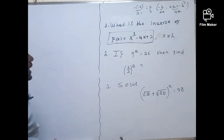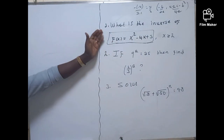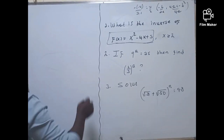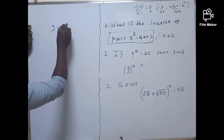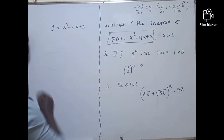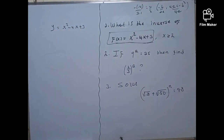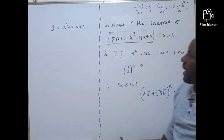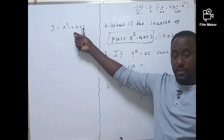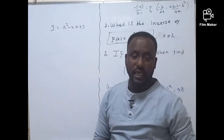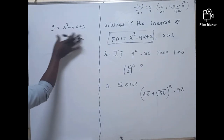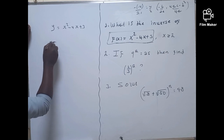And hence the function is invertible. Now, to find the inverse of any function, the first step is to write it in the form y = x² - 4x + 3. This is the first step that helps us find the inverse. After this, we have to switch the positions of the variables. So in the second step, let's switch the positions of x and y.